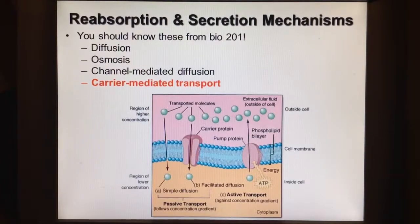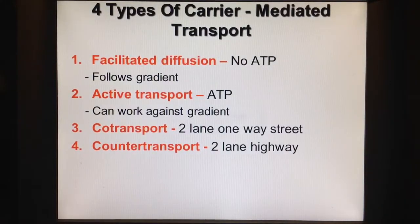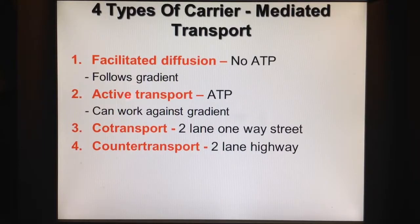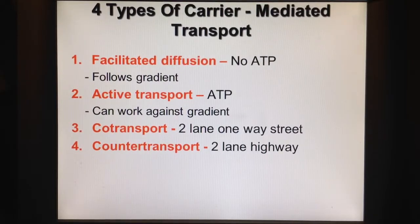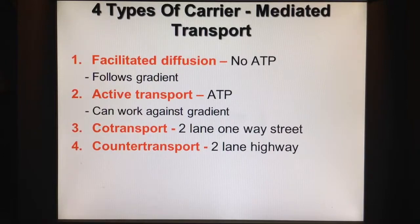Carrier-mediated transport actually requires a carrier protein. There are four types. Facilitated diffusion follows the concentration gradient — going from high to low — so no ATP is needed. Active transport goes against the concentration gradient and therefore requires energy or ATP. Co-transport is when two substances move in the same direction — for example, sodium and glucose going the same way in the kidney. Counter-transport is the opposite, where one thing goes in and another goes out, like sodium and potassium moving in opposite directions.